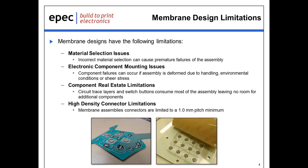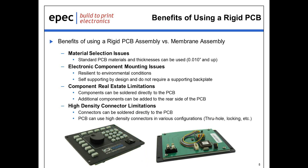We've also been running into high-density connector limitations. A lot of the newer surface-mount technologies are actually requiring a connector density that's under one-mil pitch. So we've been moving away from membrane-style technologies and into more of a rigid PCB-type technology. This eliminates many material selection issues because we can use standard PCB materials, with minimum thicknesses down to ten-thousandths of an inch. We also remove a lot of the electronic component mounting issues because the rigid circuit card is resilient to environmental conditions and is self-supporting by design.